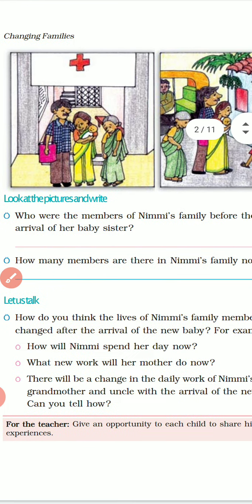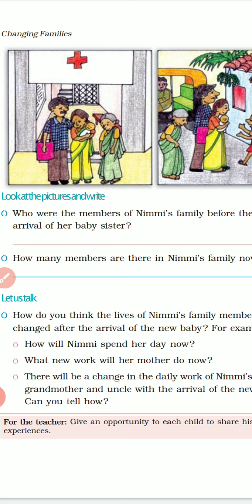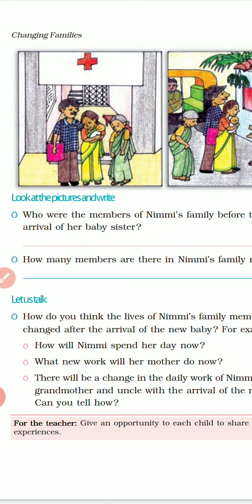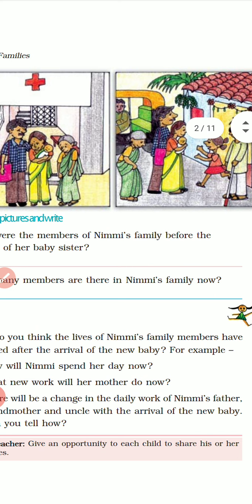So who were the family members of Nimi's family before the arrival of her sister? It was her grandmother, her parents and Nimi. Now, what changes have happened in the family? Initially it was Nimi, mother, father and grandma — they were four. And now the number of family members has increased to five.